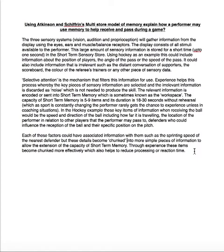Each of these factors could have associated information with them, such as the sprinting speed of the nearest defender, but these details become chunked. Chunking is the process whereby we group complicated information into simpler or bigger pieces of information, so as to allow the extension of the capacity of short-term memory. Through experience, these items become chunked more effectively, which also helps to reduce processing or reaction time.